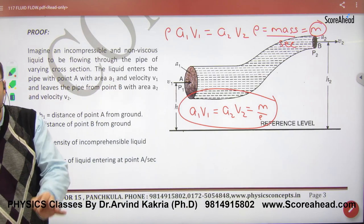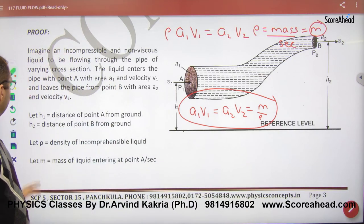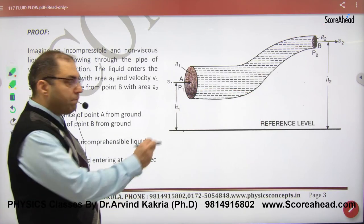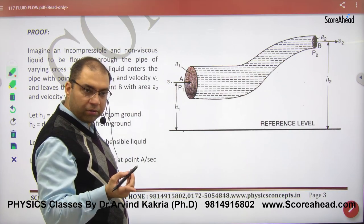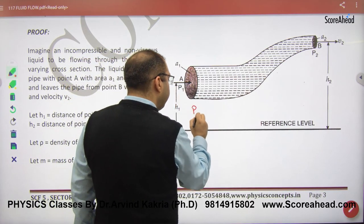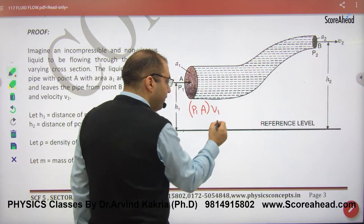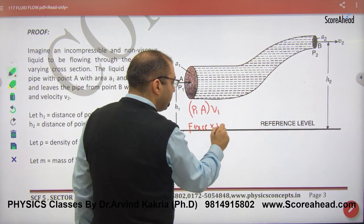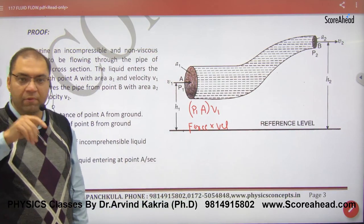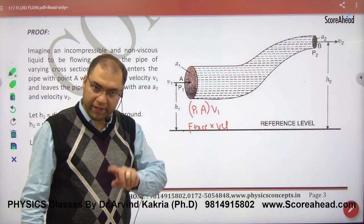Let's see one step. Suppose that pressure is P1. What is pressure into area? Force. So what is force? P1 into area is force. And what is velocity? V1. So what is force into velocity? Which means power. Work done, power. So what is power? Work done per second.